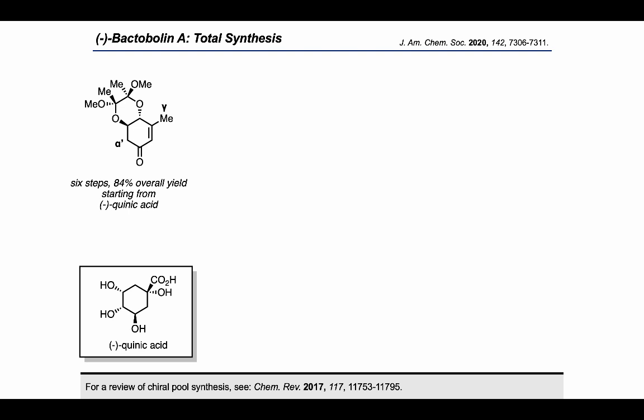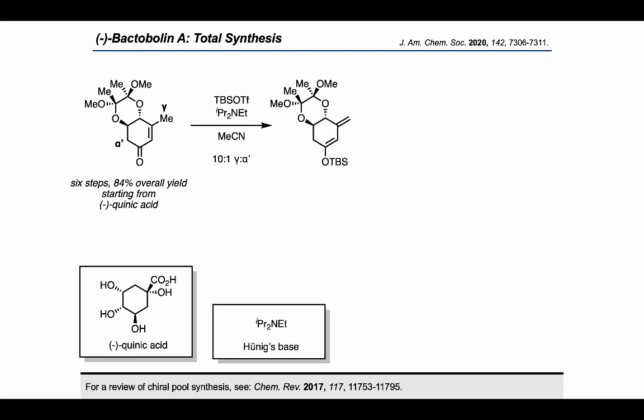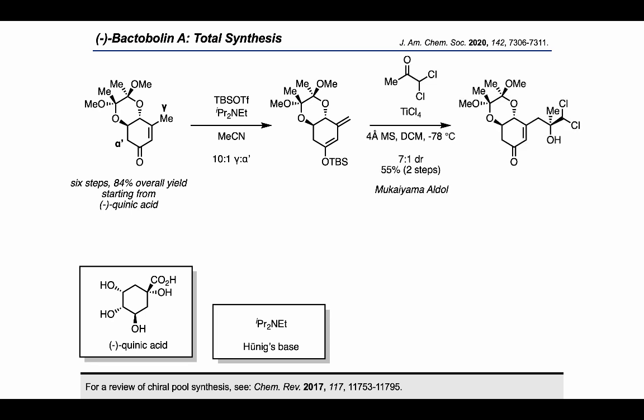Starting from this enone, they started by treating with TBS triflate and Hünig's base, which gave selective deprotonation at the gamma position. Then, treating with titanium tetrachloride and the dichloro ketone, they carried out a diastereoselective Mukaiyama aldol addition.